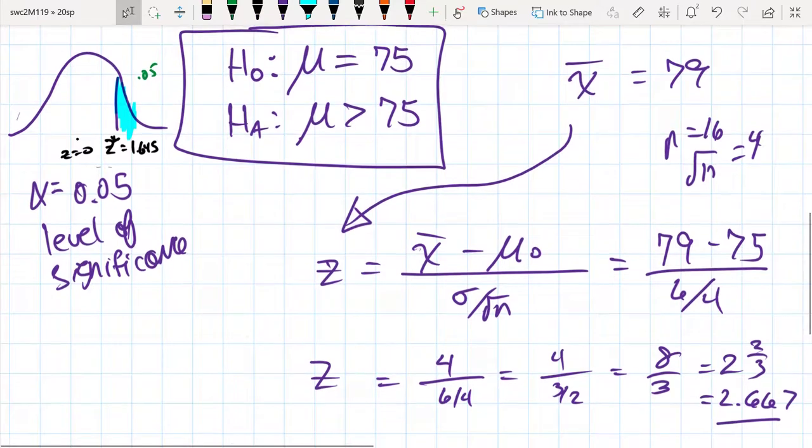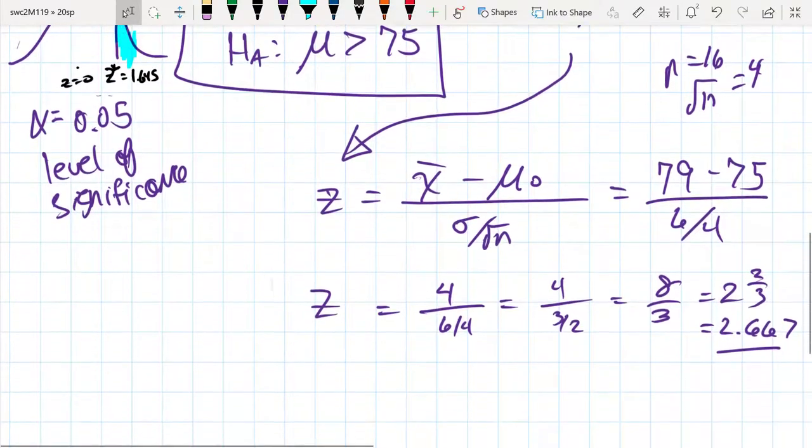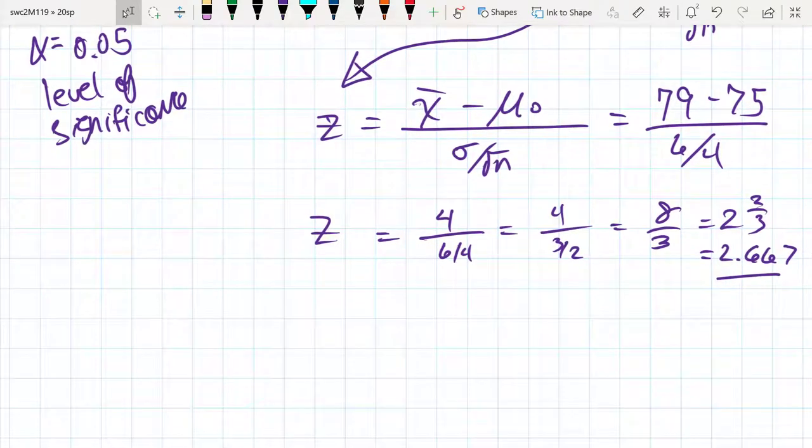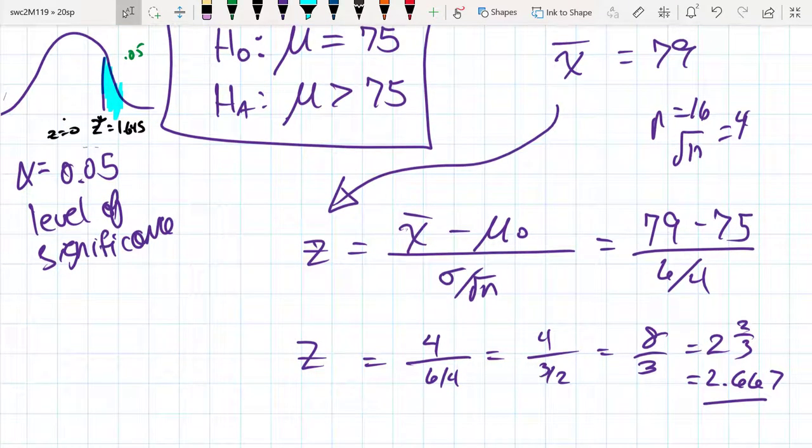We have a value that has a probability of occurring by chance that's less than 5%. It's far enough out, that 2.667, that we can say we have strong evidence against the null hypothesis. So it is significantly different.